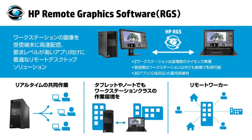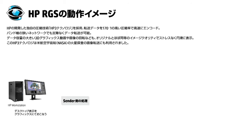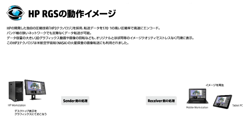それでは次に実際のHP RGSの動きについて簡単にご説明していきます。HP RGSでは画面データを送る側をセンダー、受ける側をレシーバーと呼んでいます。センダーにはRGSセンダー、レシーバーにはRGSレシーバーとそれぞれ専用のソフトウェアをインストールします。